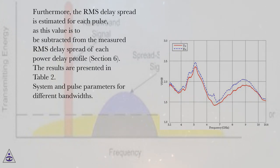Furthermore, the RMS delay spread is estimated for each pulse, as this value is to be subtracted from the measured RMS delay spread of each power delay profile, section 6. The results are presented in Table 2.